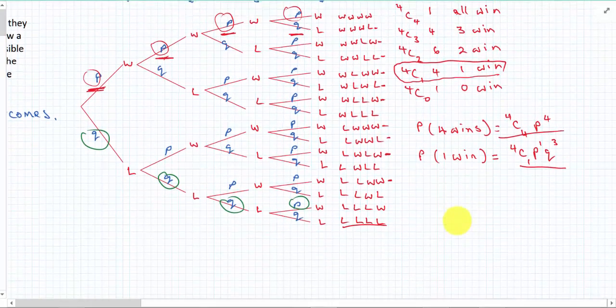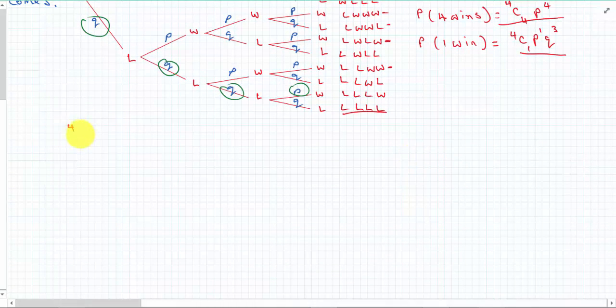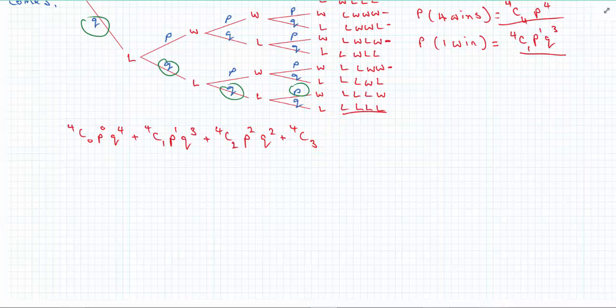So you can see how we can use our binomial expansion and notation to get our probabilities. Now one interesting thing is that if I add all these probabilities, they add up to one. So that's four choose zero p to the zero q to the four, plus four choose one p to the one q, and so on. That equals to one.